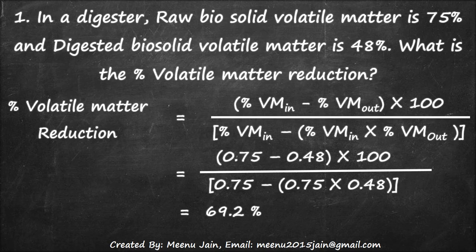Percent volatile matter reduction, as per the formula, is: percent volatile matter in minus percent volatile matter out, multiplied by 100, divided by percent volatile matter in minus (percent volatile matter in multiplied by percent volatile matter out). That is: (0.75 minus 0.48) multiplied by 100, divided by (0.75 minus 0.75 multiplied by 0.48), which equals 69.2 percent.